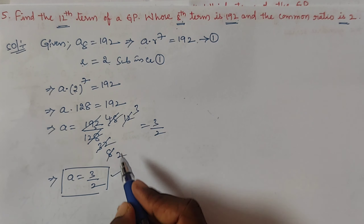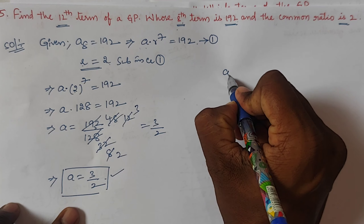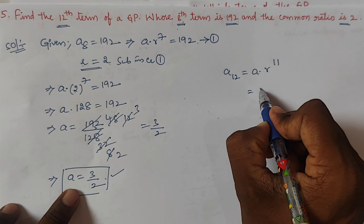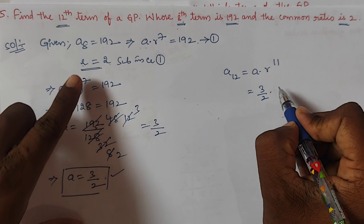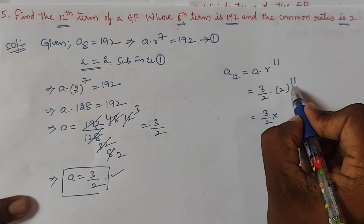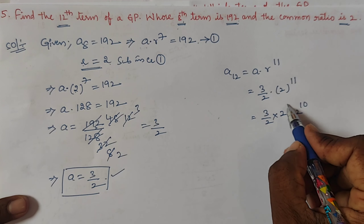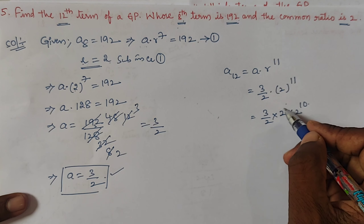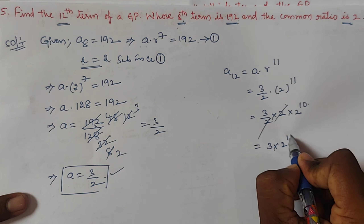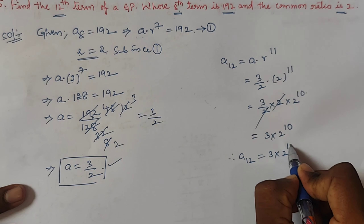With a = 3/2 and r = 2, find a₁₂ = a·r^11 = (3/2) × 2^11 = (3/2) × (2 × 2^10) = 3 × 2^10. Therefore the 12th term of the GP is 3 × 2^10.